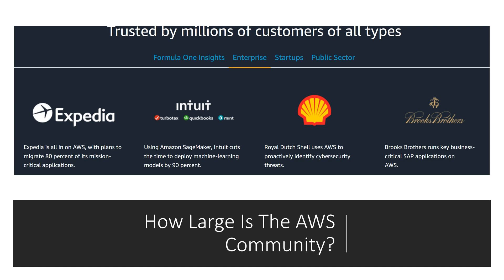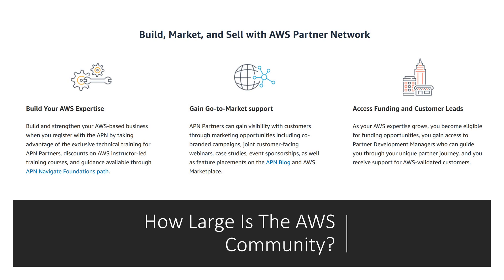Customers across virtually every industry and of every size — including the fastest-growing startups, largest enterprises, and public sector organizations — are running every imaginable use case on AWS to lower costs, become more agile, and innovate faster. The AWS Partner Network (APN) includes thousands of systems integrators who specialize in AWS services and tens of thousands of independent software vendors who adapt their technology to work on AWS.